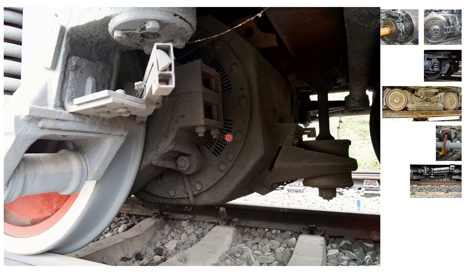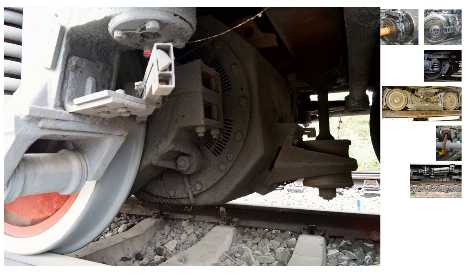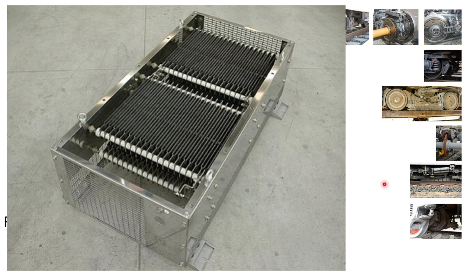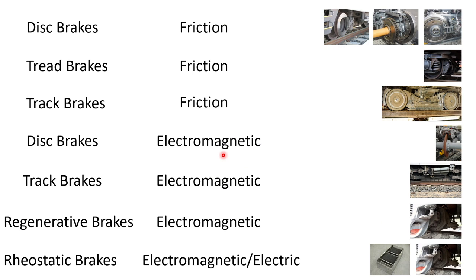Regenerative brakes use the same motor for propulsion as for braking — the motor now works as a generator. Because of the train's momentum, the wheels rotate the coil inside the generator, generating energy while also providing retardation force. The kinetic energy is converted into electrical energy, which is fed back to the main power supply or catenary. If the power supply isn't receptive, the power must be burned in resistors — that's rheostatic braking.